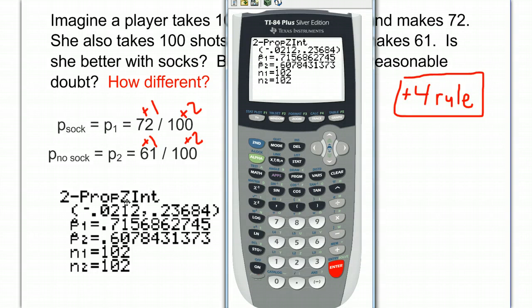To find the middle of any two numbers, you just average them together. You add them and divide by 2. So if we take our 0.23684 plus our negative 0.0212 and divide that by 2, we're going to get 0.1078.